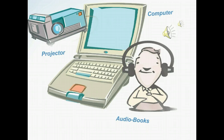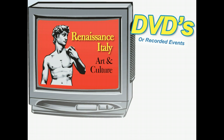Let's start with hardware, which can be anything from a radio to an overhead projector. One of the more obvious examples of hardware is a computer, but there are several other useful tools. For example, students can use a personal audiobook reader with headphones to listen to an audiobook version of their textbook. You might also use a video or DVD player to show a recorded event, such as a documentary about how the Renaissance period affected art and culture in Italy.